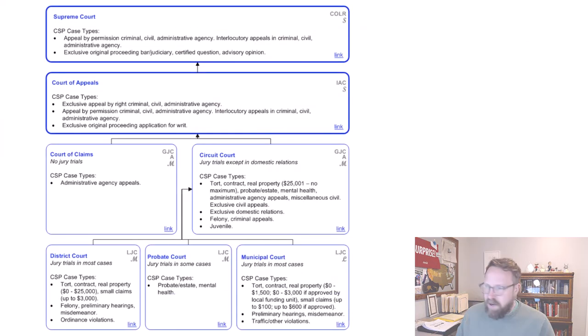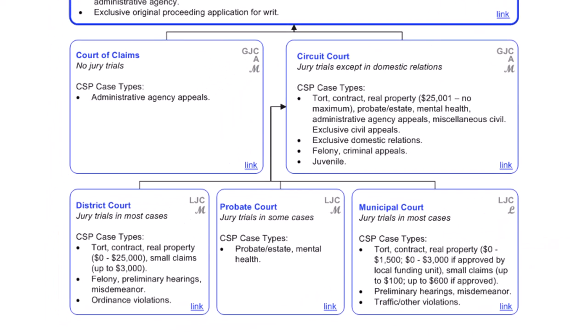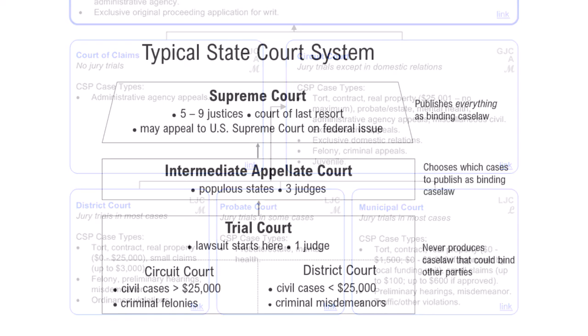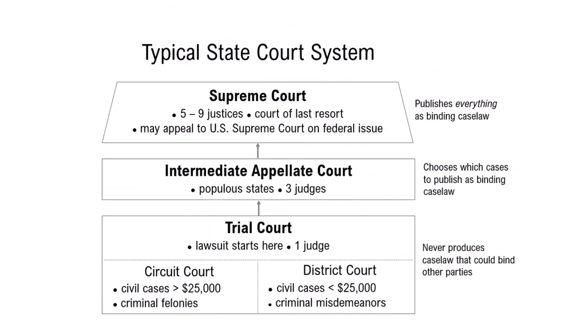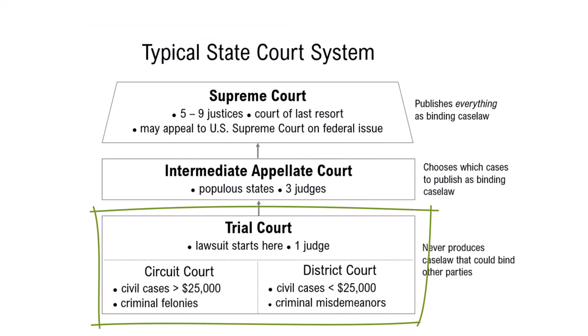You can see down here these are the trial courts — this is where you begin a claim to resolve a dispute. Most cases of significance you would start in circuit court. The court of claims is where you go if you want to sue the state of Michigan. Otherwise, most cases really start in circuit court or district court.